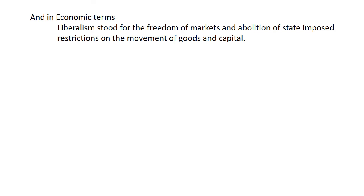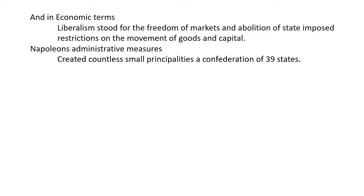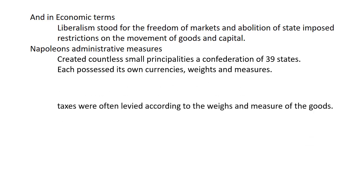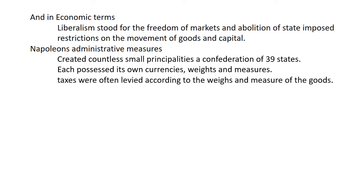Take the example of the German-speaking region in the first half of the 19th century, where Napoleon's administrative measures had created countless small principalities. There were 39 states under Napoleon's rule, each with their own government, currencies, weights, and measures. While passing through these 39 states, merchants and traders had to pay taxes according to the weights and measures of goods in each region.